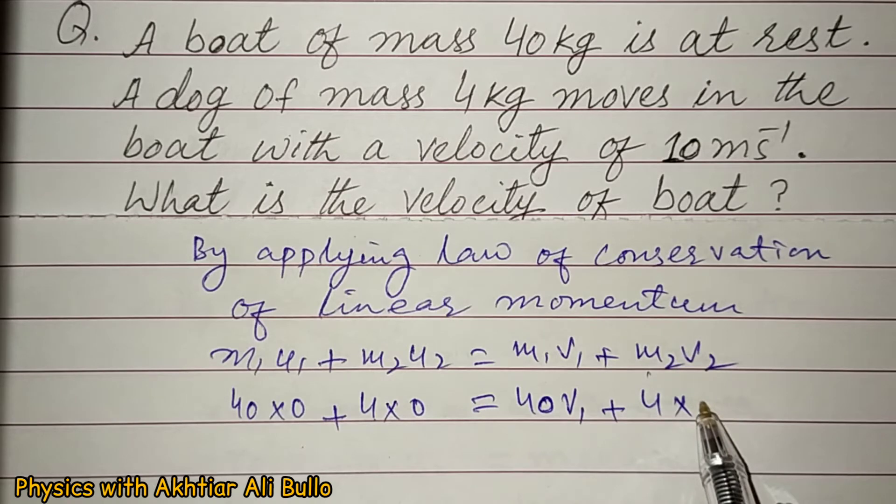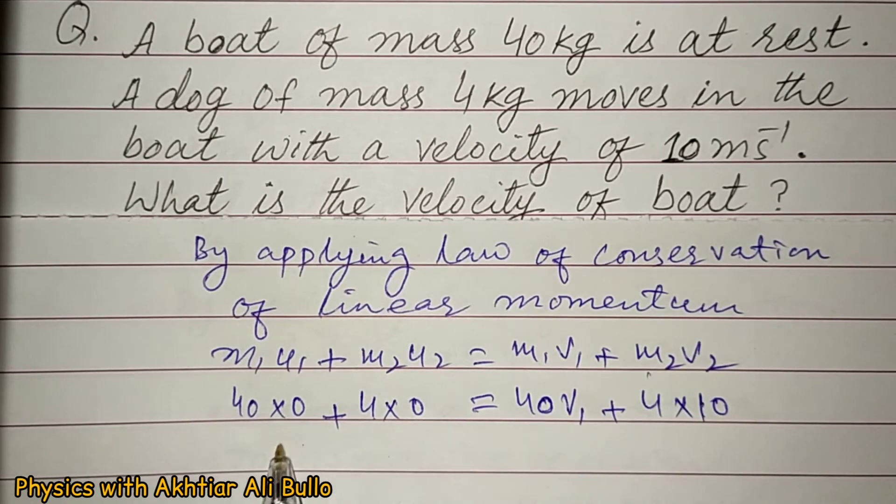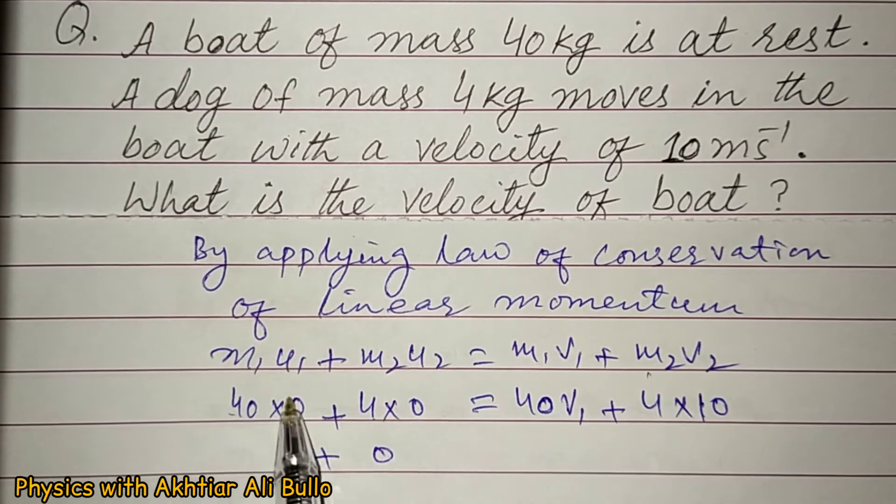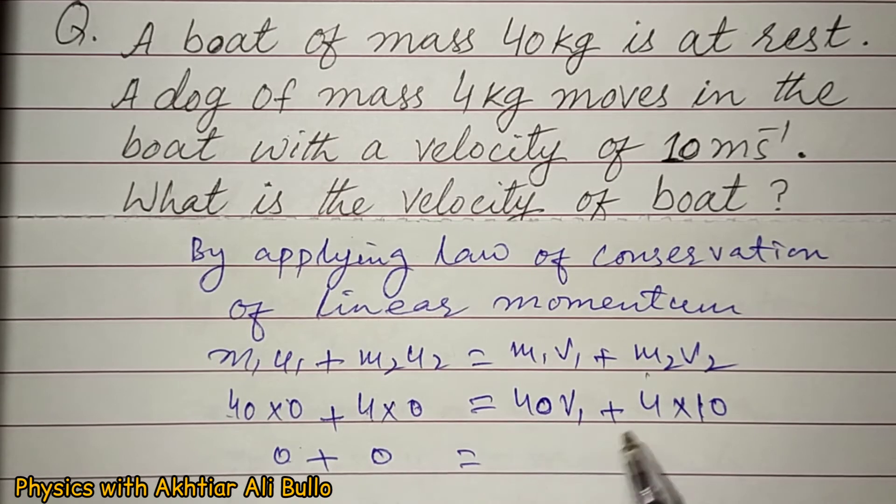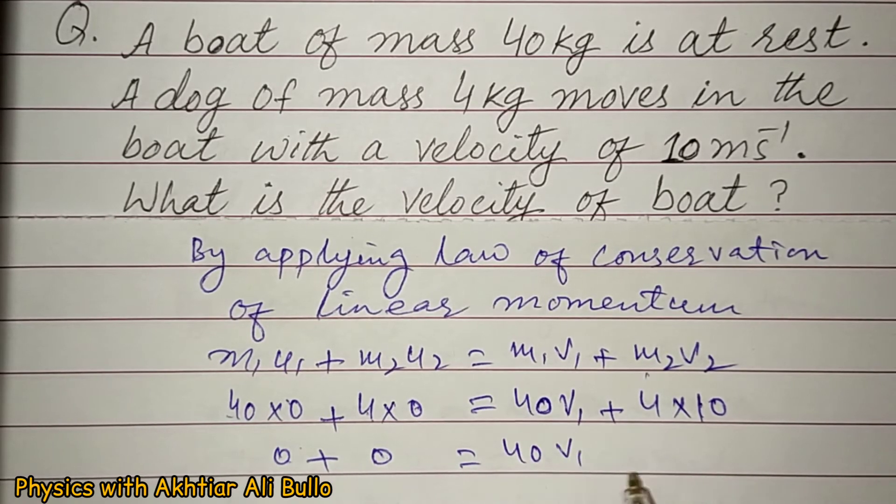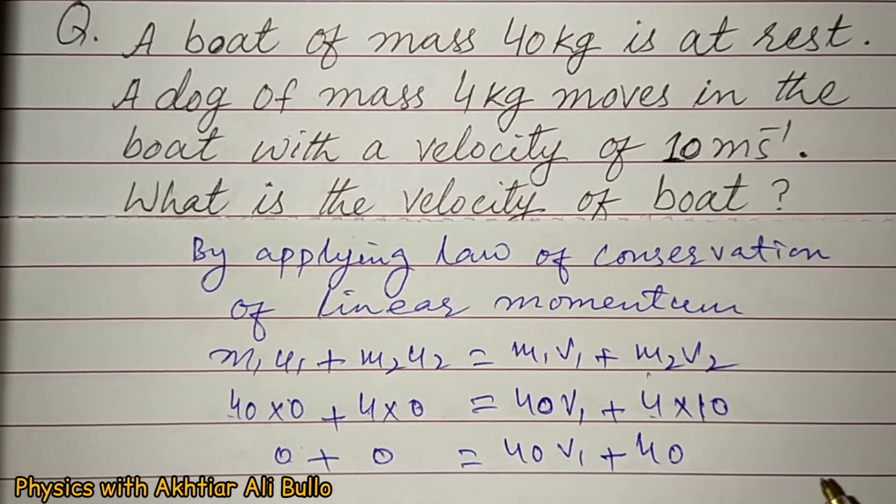Into v2 is 10 meter per second, so it will be 0. 40 × 0 will be 0 and 4 × 0 will also be 0, so 40·v1 plus 4 × 10 equals 40.